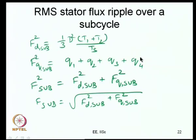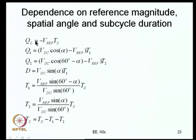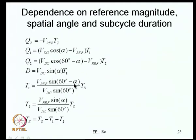T1 is a function of V_ref and alpha: T1 = V_ref × sin(60° − α) / (V_dc × sin 60°) × T_s. Similarly T2 is a function of V_ref, alpha, and T_s, and T_z = T_s − T1 − T2. Q_z = minus V_ref × T_z. When active vector 1 is applied, the Q-axis component of the applied vector is V_dc × cos(α); what is required is V_ref; so the Q-axis error is V_dc × cos(α) − V_ref, and Q1 = (V_dc × cos(α) − V_ref) × T1. For active state 2, the Q-axis component is V_dc × cos(60° − α), giving Q2 = (V_dc × cos(60° − α) − V_ref) × T2. D = V_dc × sin(α) × T1 = V_dc × sin(60° − α) × T2.